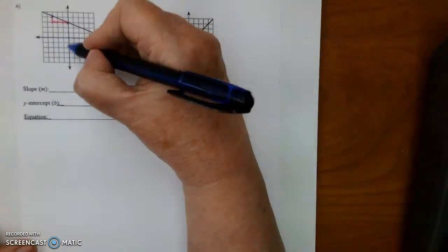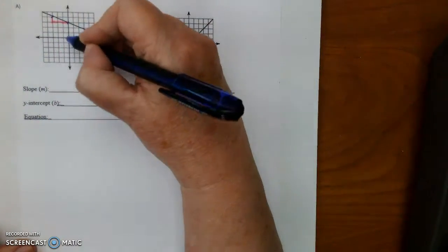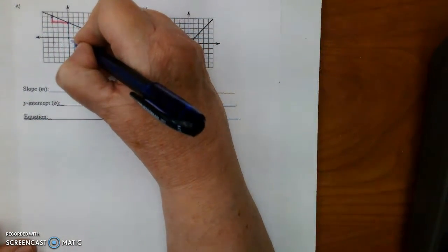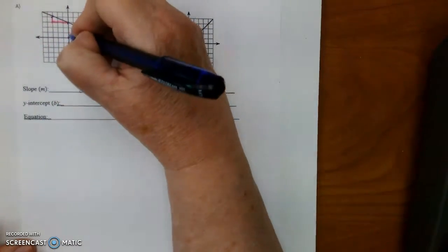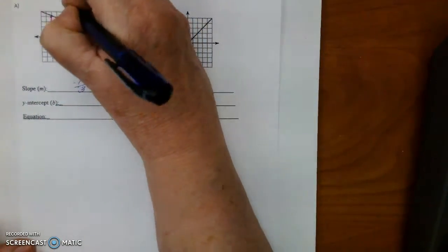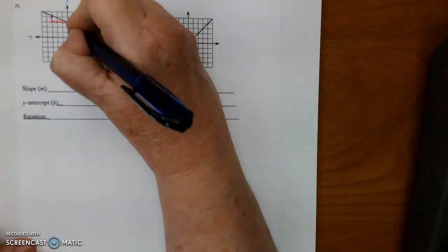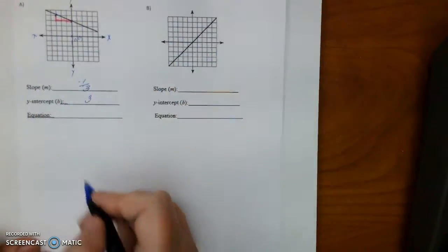So we know the slope is negative 1 over 3, and then we look to see where the Y intercepts. We go 0, 0, and where it intercepts on the Y, this is the Y-axis, we're going to go 1, 2, 3, and it's positive. So the Y-intercept is 3.